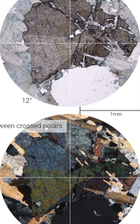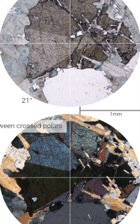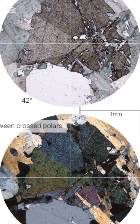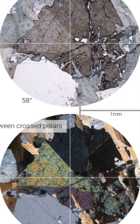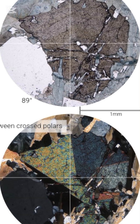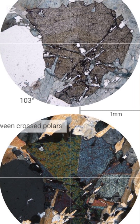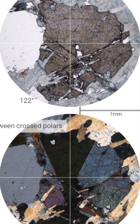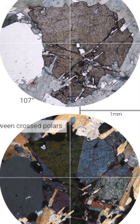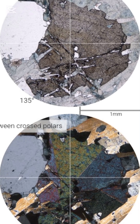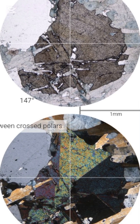This thin section shows a coarse-grained igneous texture with large grains of coarse muscovite — white mica — and altered plagioclase feldspar, which you can see in the thin section with the rotation of the stage.